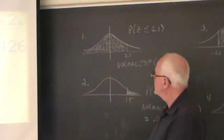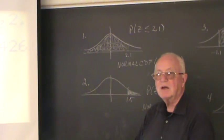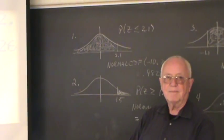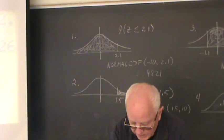The next problem I'd like to do is to find the probability that Z is greater than or equal to 1.5. So again, we'll go to second distribution, normal CDF.